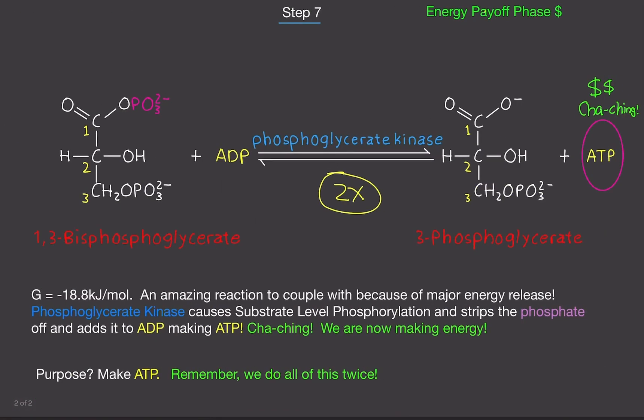Step 7, still part of the energy payoff phase. So now we have the 1,3-bisphosphate glycerate. Now here's where we're actually going to cash it in. We're going to add in the reactant side an ADP molecule, adenine diphosphate. We're going to use the enzyme phosphoglycerate kinase. And what we're going to do is basically strip off this phosphate we just added. And we're going to add it to ADP.